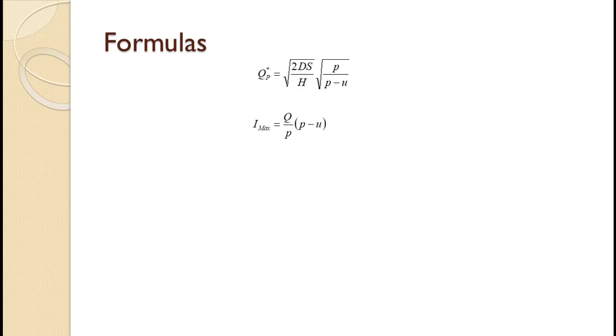Maximum inventory level is the economic order quantity divided by the production rate quantity times the production rate minus the usage rate. Note that the maximum inventory level will always be less than Q. Also note that the maximum inventory level was not discussed in the basic EOQ model, but it equals Q in that model.